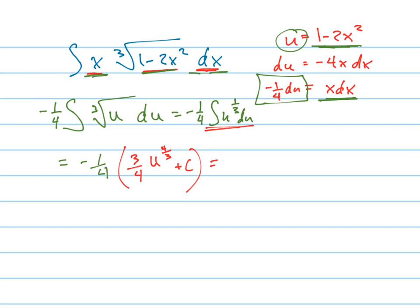Which simplifies then into, and again, this negative 1 fourth and the c, you can kind of ignore those because the constant is just some constant. So negative 1 fourth times some constant is just some other constant. So you really didn't even need those parentheses there so much.